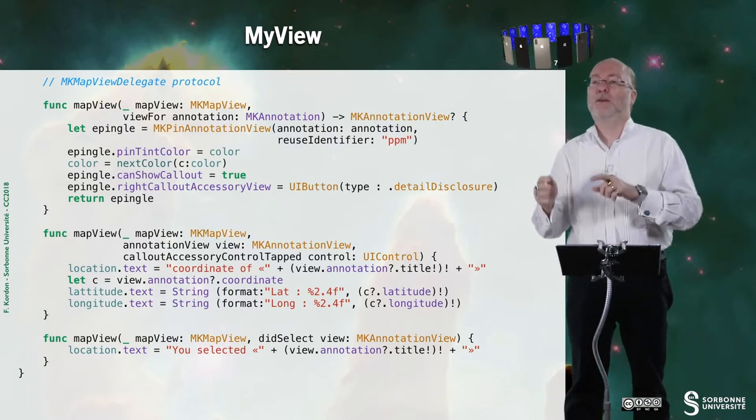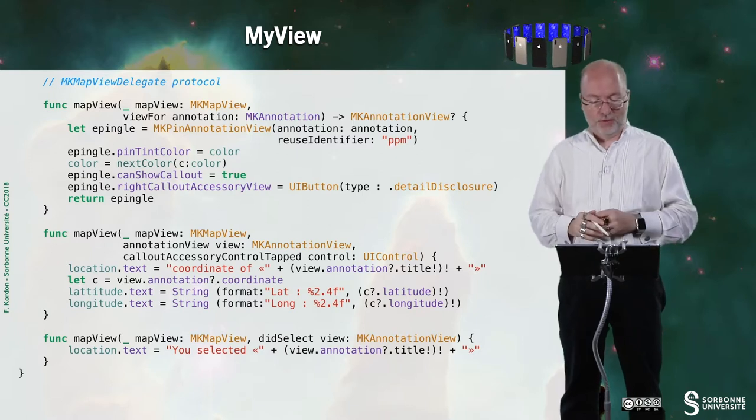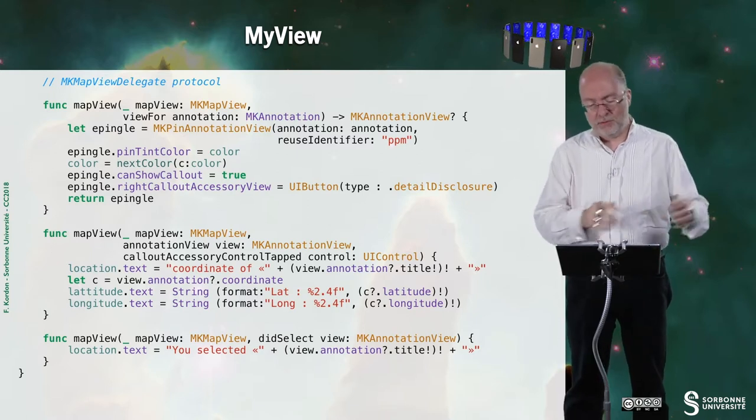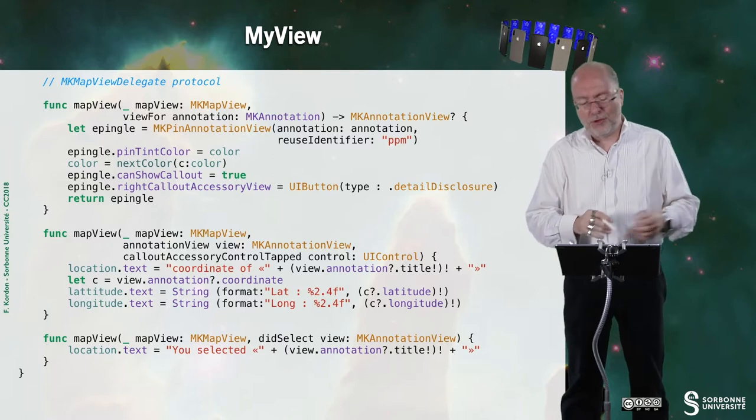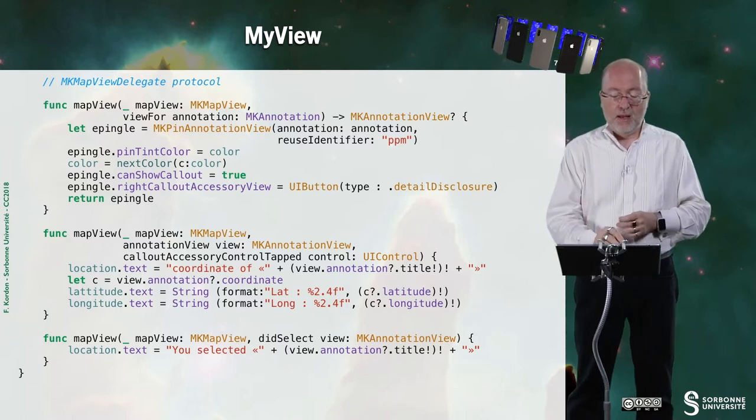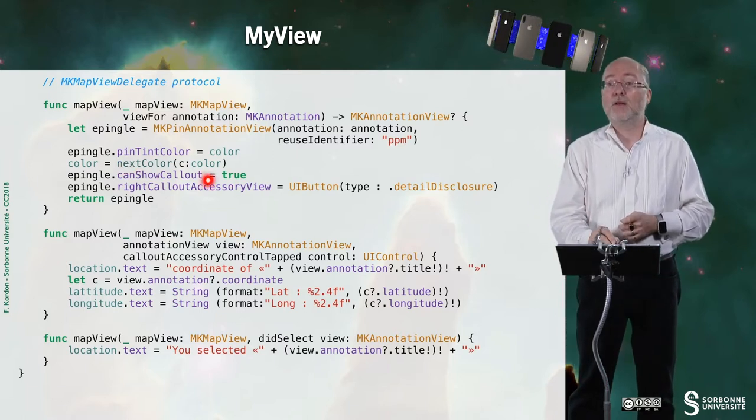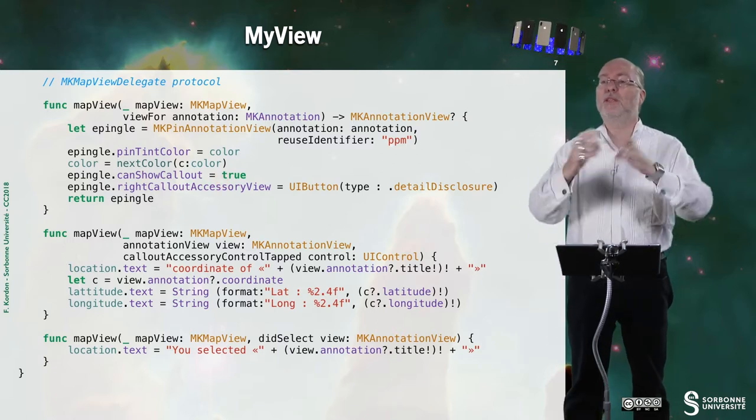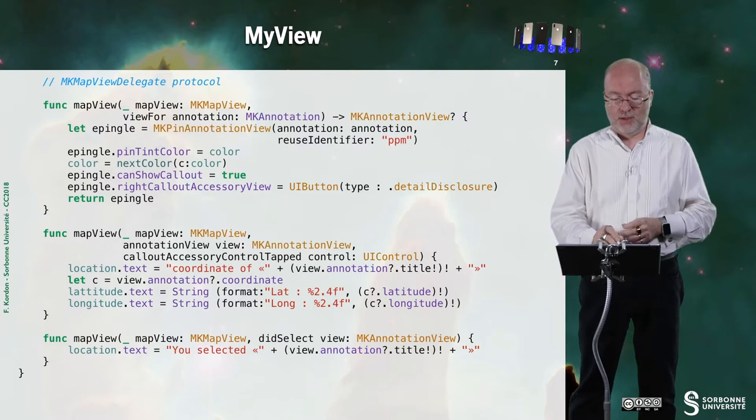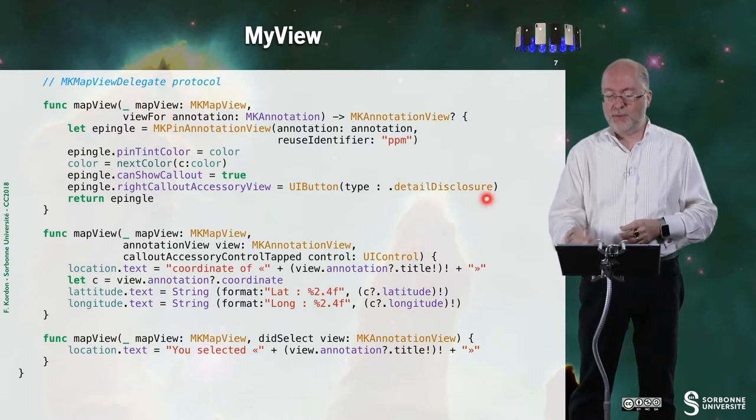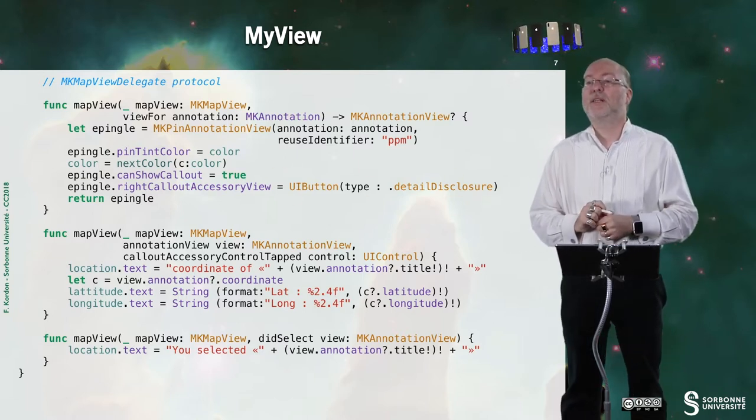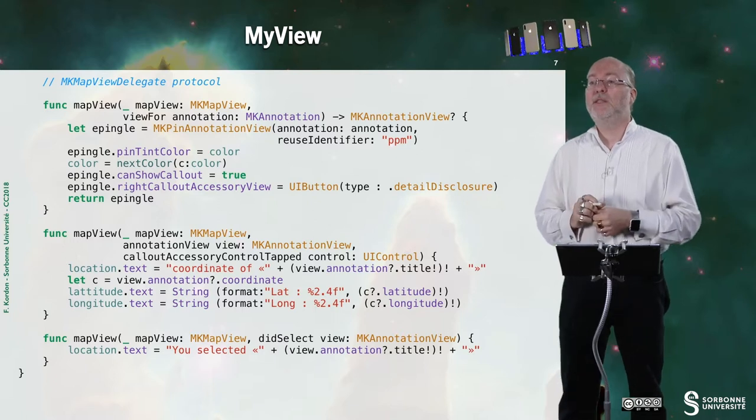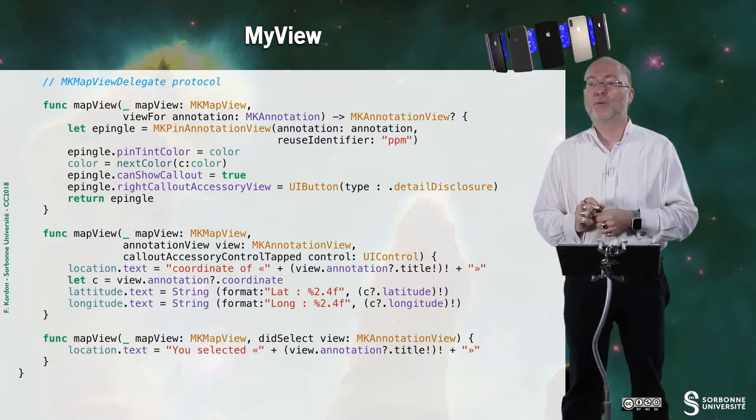You just saw that in the previous slide or in fact a few functions ago in this slide. And then I say that I want to show the callout. So if I tap on the color then it will appear. And I set up that I will have an accessory view that will be a detailed disclosure button.